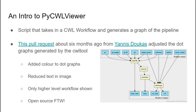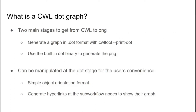A pull request on the CWL tool repo changed the way that dot graphs could be generated from the CWL tool program. Firstly, a bit of colour was added so we can easily distinguish inputs and outputs from steps. Tiny unreadable slanted text on arrows was removed, and just the high-level workflow is shown, making it a much simplified and easier to read graph — a prime example of the benefits of open source software. To get from a CWL workflow file to the image, there are two main stages: first, create the dot file written in graph description language using the CWL tools print dot parameter; then call the Unix binary dot on this dot file to generate an image file.